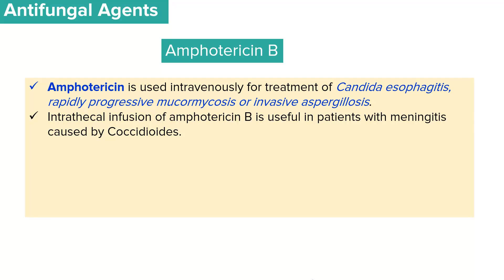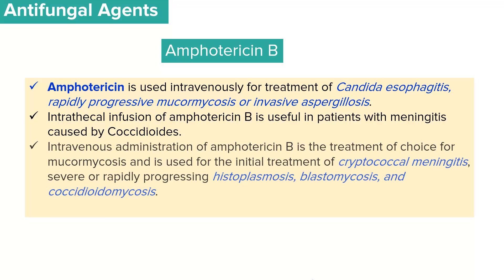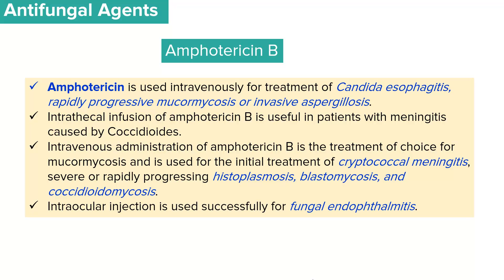An intrathecal infusion of amphotericin B has been found to be useful in the treatment of patients with meningitis caused by coccidioides. Intravenous administration of amphotericin B is used as treatment of choice for mucormycosis and as the initial treatment of infections caused by cryptococcal meningitis, severe or rapidly progressing histoplasmosis, blastomycosis, and coccidioidomycosis. Amphotericin B has also shown to be effective in the treatment of fungal endophthalmitis through a local intraocular injection.